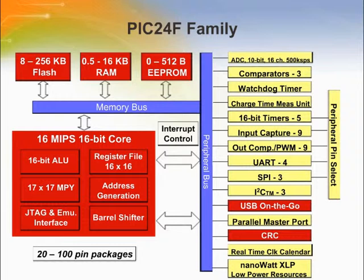A JTAG interface is now available for emulation and testing. Since the majority of programs on a 16-bit processor will be written in C, a large amount of flash program and data memory is now available — 256K bits of flash and 16K bytes of RAM. Many peripherals are also available, with two notable new ones: the USB On-The-Go (OTG) peripheral and the CRC error correction peripheral.